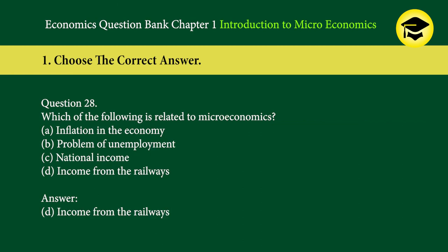Question 28: Which of the following is related to microeconomics? A. Inflation in the economy, B. Problem of unemployment, C. National income, D. Income from the railways. Answer: D. Income from the railways.